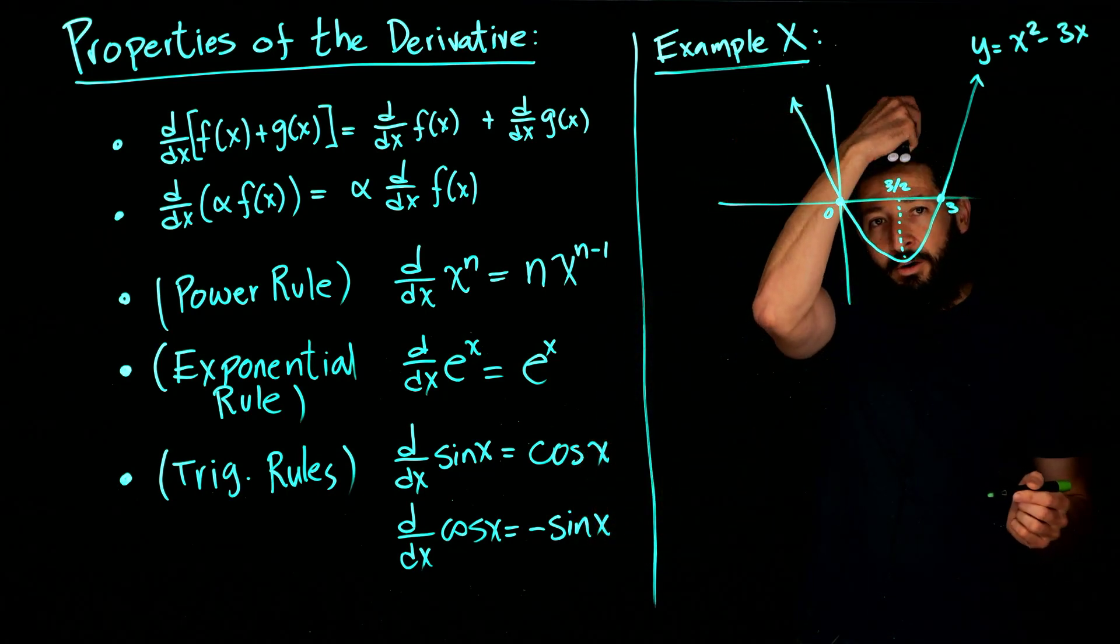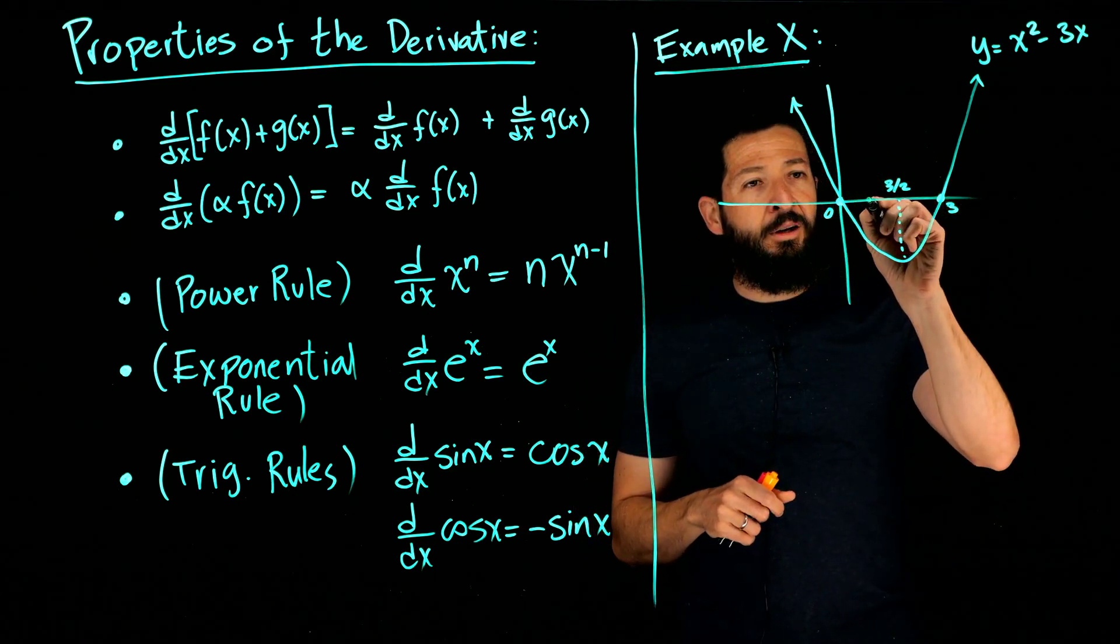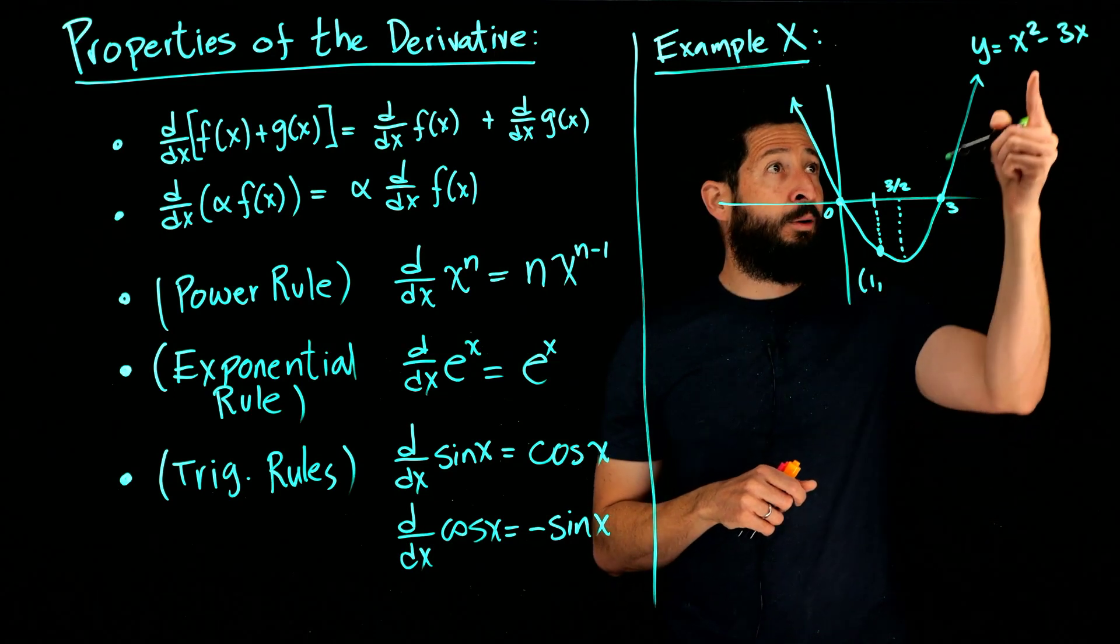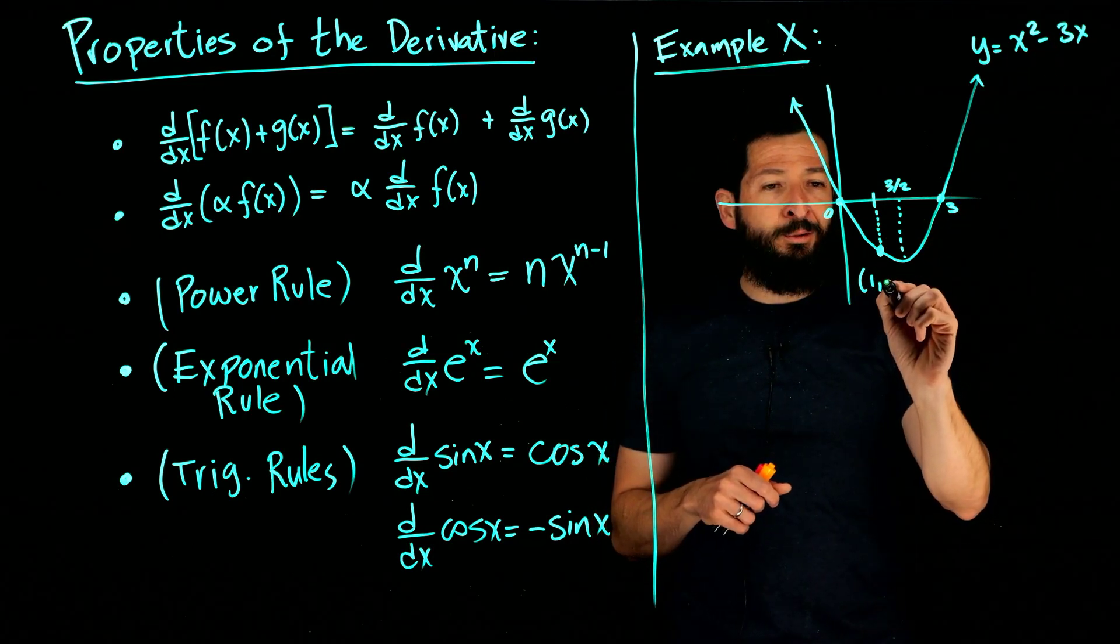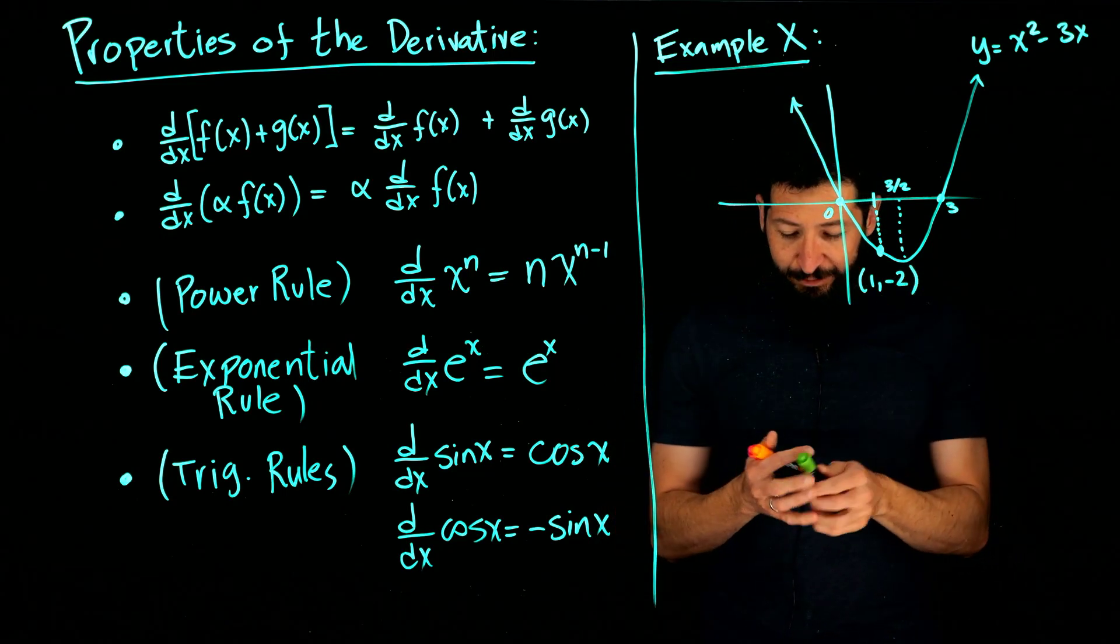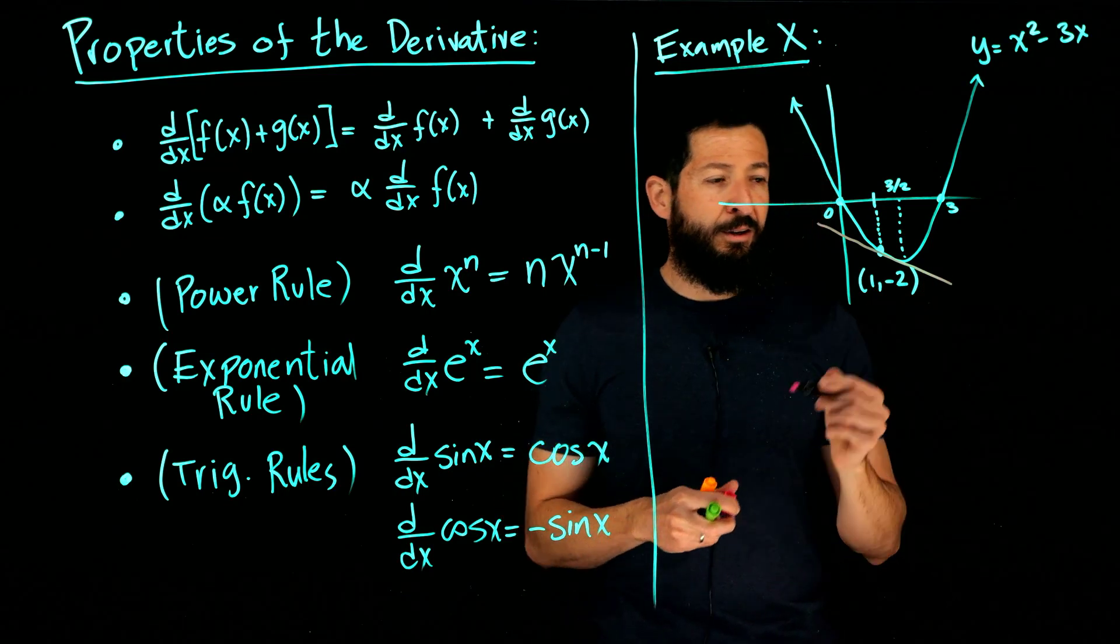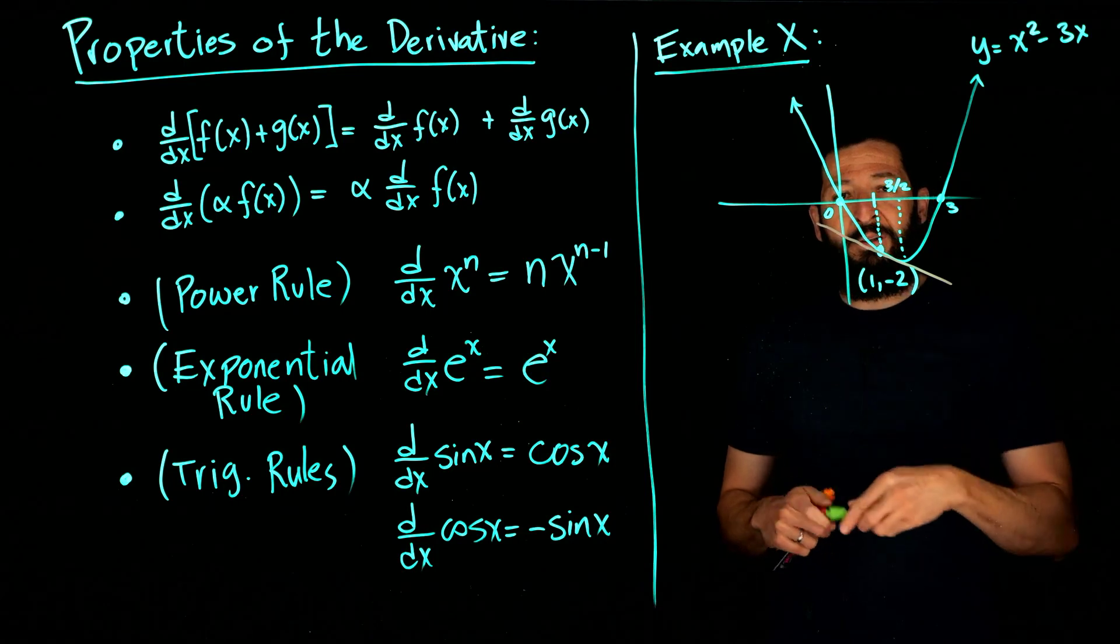And let's say we want to know what is going to be the tangent line. So I suppose here, one would be a perfect point to look at. This point being one comma—we evaluated here, we get one squared minus three, negative two. So I'm kind of cooking up the example for you guys.